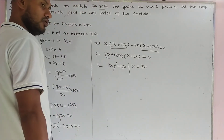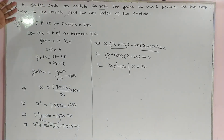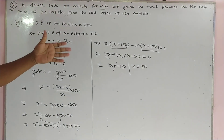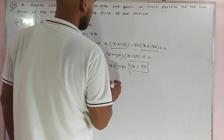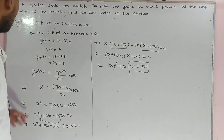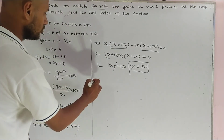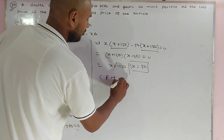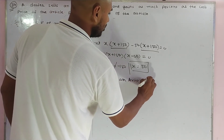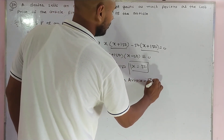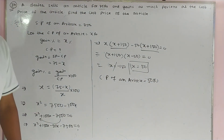We know that the CP cannot be negative, so we reject x equals minus 150. Our answer is x equals 50. So the CP of the article is equal to Rs.50. I hope you are able to follow me. Thank you very much.